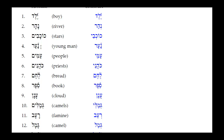Number four: Amim — for peoples. The accent on the first syllable tells you it is a segolate noun, so the construct form is identical. Number five: Kohanim — the Hirik Yod Mem Sofit drops off and is replaced with a Seri Yod. Result: Kohanei. Number six: Lechem — another segolate noun, so Lechem remains the same in construct.